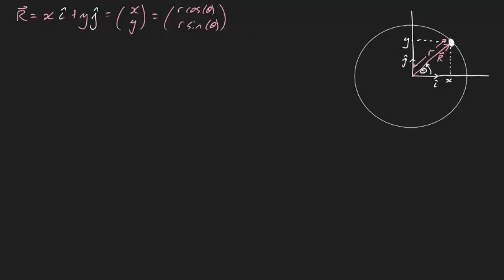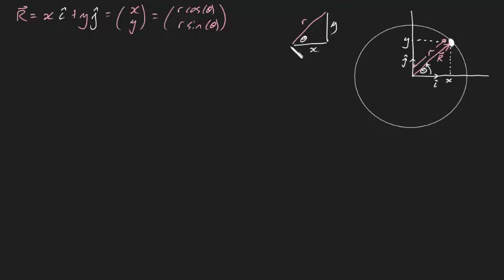In case you don't know how I did that, it's just simple trig. I realized that this is a distance r, this is a distance x, this is a distance y, and this is theta. That means x is equal to r cosine theta, and y is equal to r sine theta. Okay, well now we're ready to proceed.